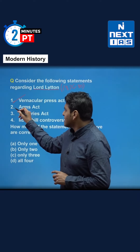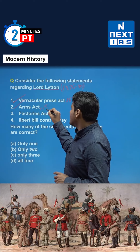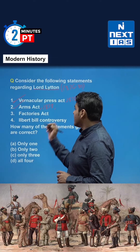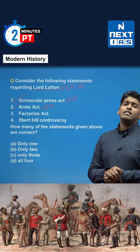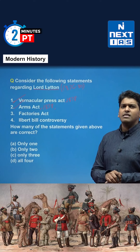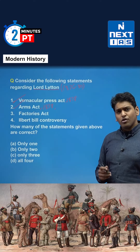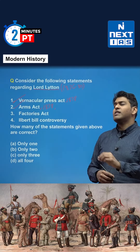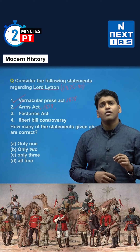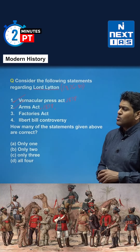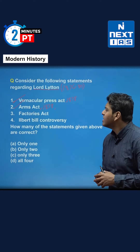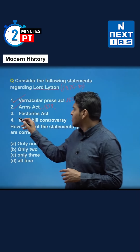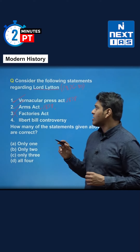The next option is the Arms Act, also correct, also passed in 1878. This act was somewhat racist in nature — it stipulated that Indians could not bear arms without a license, with a lot of permissions and paperwork required to prevent Indians from freely obtaining arms licenses. No such restrictions were placed on Europeans.